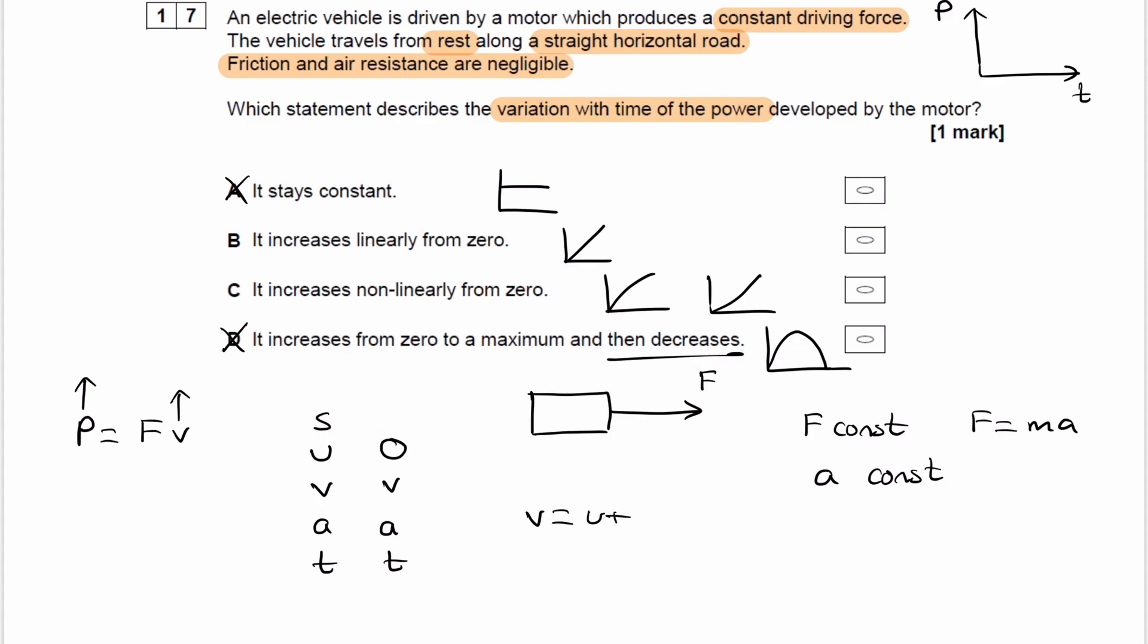From these four we can get an equation that relates v and t. We can use v is equal to u plus at. u is 0, and therefore v is equal to at.